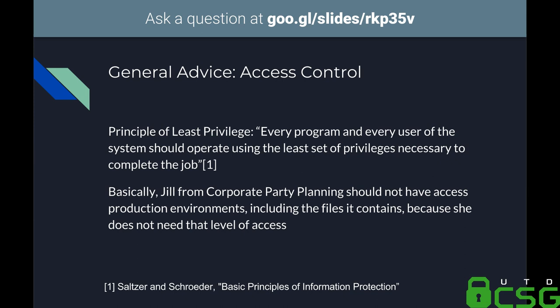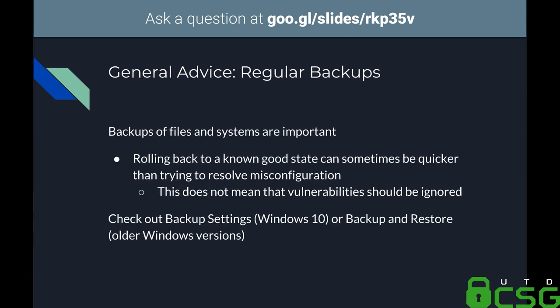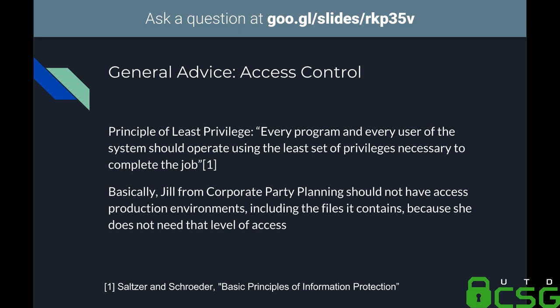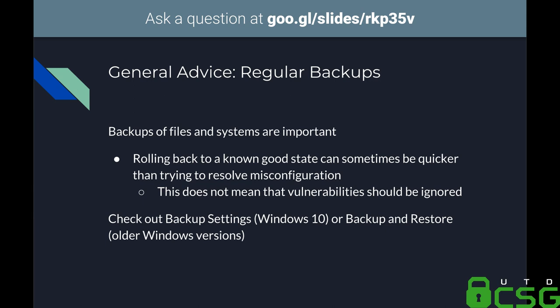Access control is highly important. If someone lower-level in a corporate environment — like Jill from Corporate Party Planning — has access to the most important machine in the company, there's something wrong. That brings in the principle of least privilege: you only get the privileges you absolutely need to accomplish your tasks. This was originally proposed by Saltzer and Schroeder in their 1975 paper 'Basic Principles on Information Protection.'